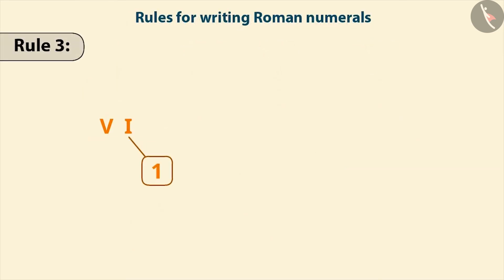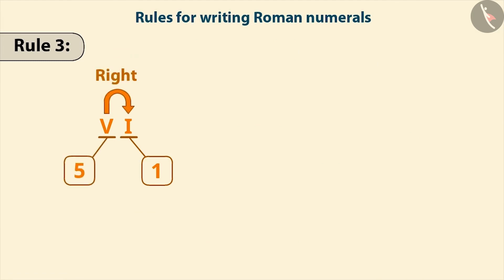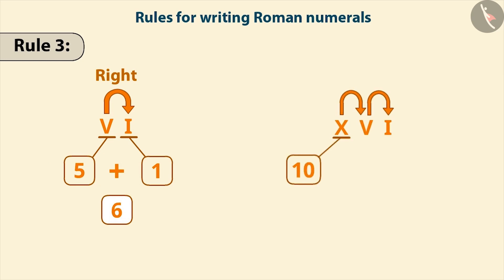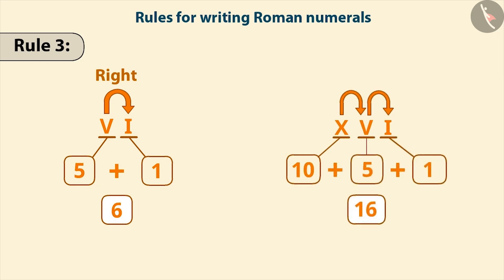If the symbol of smaller value is written to the right side of the symbol of larger value, then their values are added. Just like adding 1 to 5 gives the number 6, and adding 10, 5 and 1 gives the number 16.